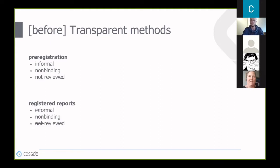This can also be formalized through registered reports, a fairly new publication method that asks researchers to do all those things done in preregistration, but the proposed study then goes through peer review before any data is collected. After review, when reviewers and researchers are satisfied with the questions and the methods for answering them, researchers start collecting data. No matter what the outcome is—whether the hypothesis is confirmed or rejected—the study will be published, because everyone agrees the method was valid.